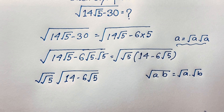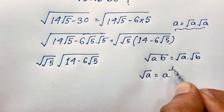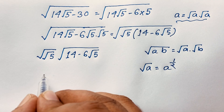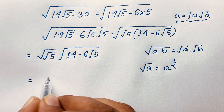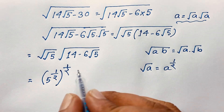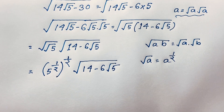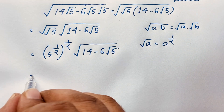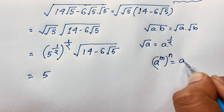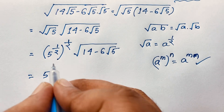We know that √a equals a to the power half. So √5 becomes 5 to the power half, and the outer square root is another power of half. Using the law (a^m)^n = a^(mn), we get half times half equals 1 over 4.